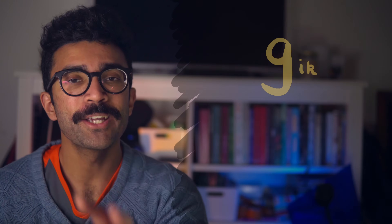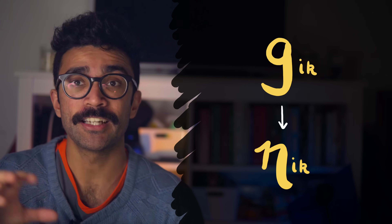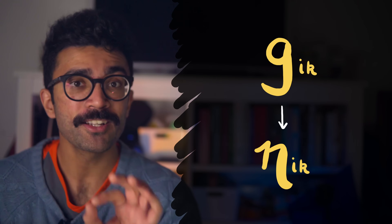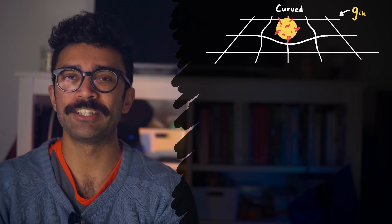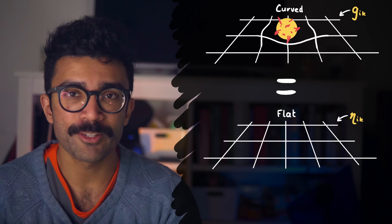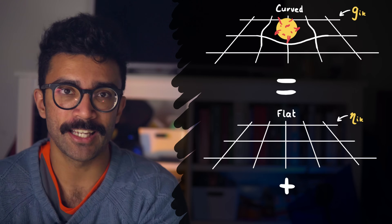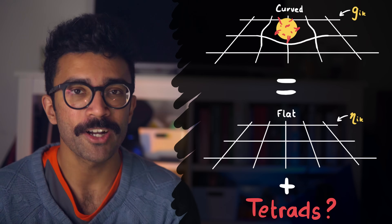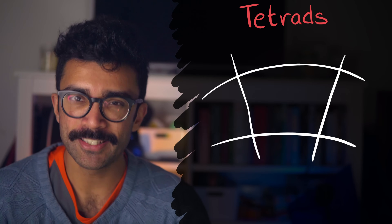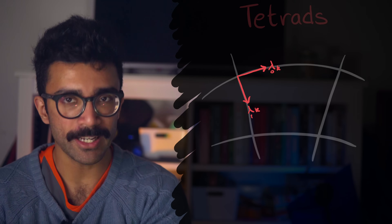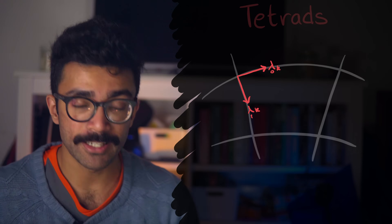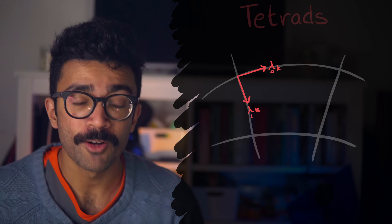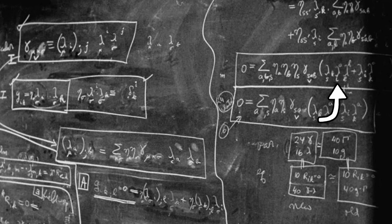So, as we can see, this general metric tensor G and the flat spacetime metric tensor eta are used all over the place on this blackboard. What Einstein is doing here is trying to describe a generic spacetime metric using the flat spacetime one and then adding these interesting entities called tetrads to incorporate the curvature in. Tetrads are basically a series of independent vectors that can be defined at every single point in any spacetime that we're studying.